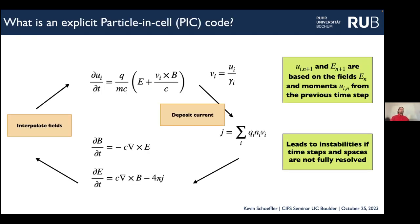What you normally think of for an explicit particle-in-cell code is this PIC loop: you step the momentum using the momentum equation, deposit the current and use this to step Maxwell's equations, then interpolate back. This works very nicely, but when we find u at a future time we're using the previous times — and this works well as long as you resolve your time steps and spatial scales very well.